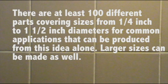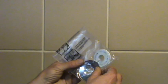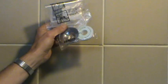There are at least a hundred different parts covering the sizes from quarter inch to inch and a half diameters for common applications that can be produced from this idea alone. Larger sizes can, of course, be made as well. Note the three inch clamp with the oval flange later in the video.